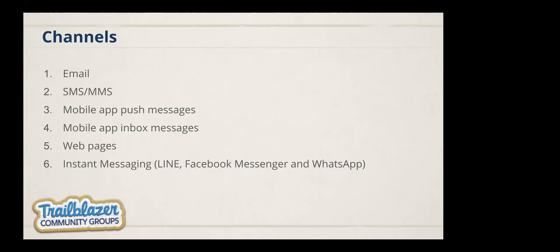Next we have web pages, enabled through Cloud Pages. The other channels we have are instant messaging — Line and Facebook Messenger are two popular instant messaging apps; Line is only available in Japan, and this is enabled through Group Connect. New to the January release is WhatsApp integration, which doesn't fall under Group Connect and is completely separate — and it won't appear in the exam. Interestingly, WhatsApp actually have to approve the templates you create before you can start sending messages, just to check they don't contain promotional content.